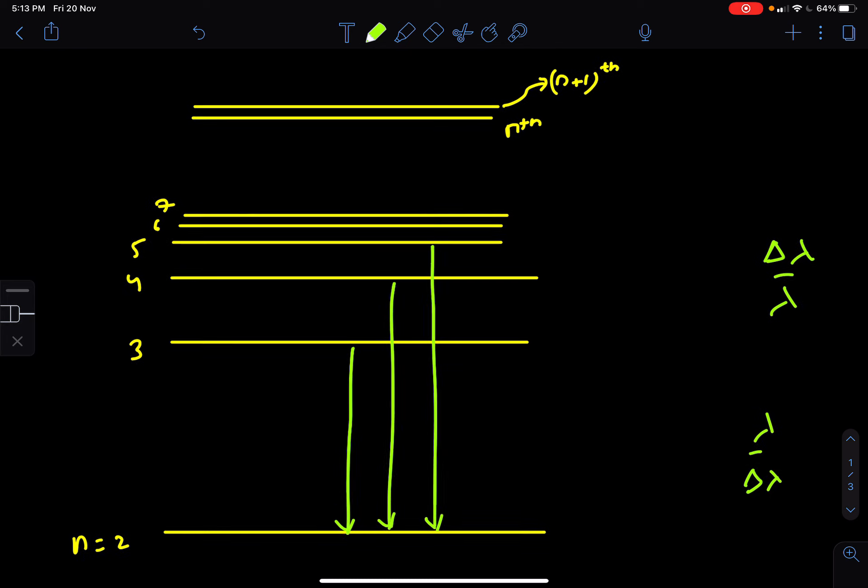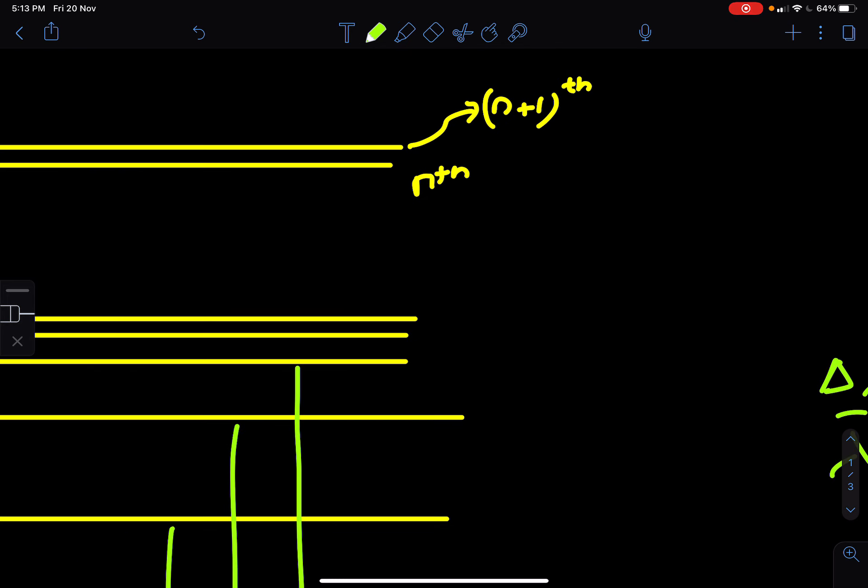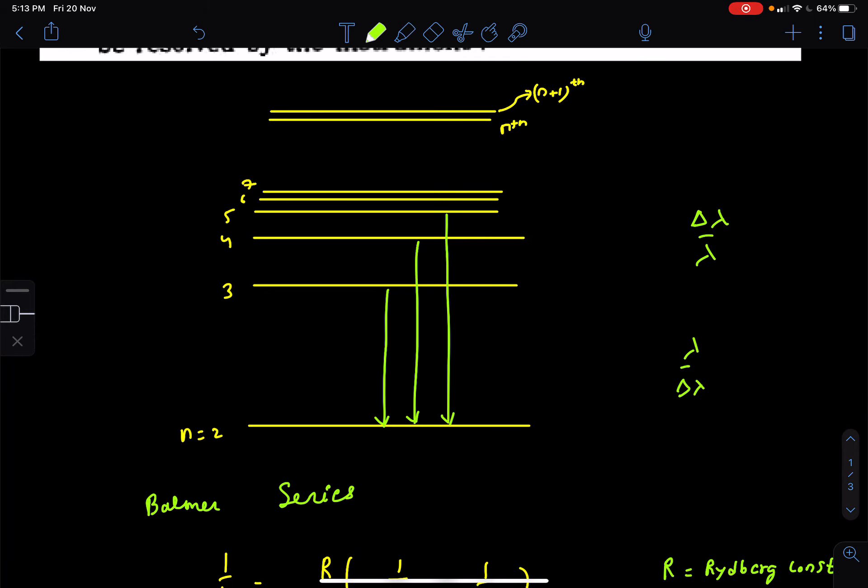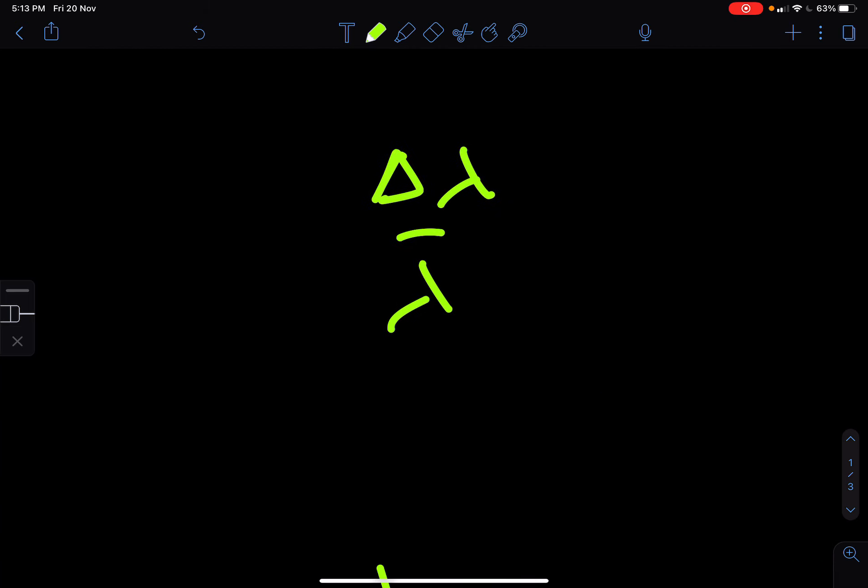And so, this nth energy level and the n plus 1th energy level will have their energies very close. So whether the electron comes from n to n equal to 2, or whether it comes from n plus 1 to n equal to 2, the difference in the wavelength keeps reducing as we keep on going from higher n to n equal to 2. And because this difference in lambda keeps decreasing, this delta lambda by lambda keeps reducing.